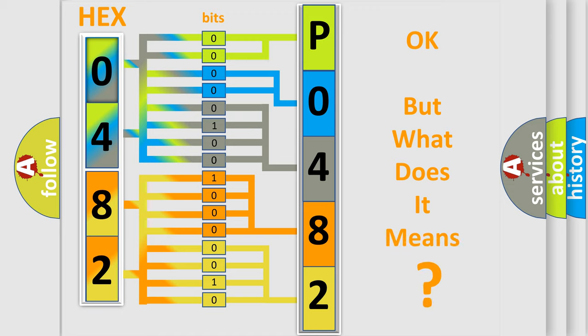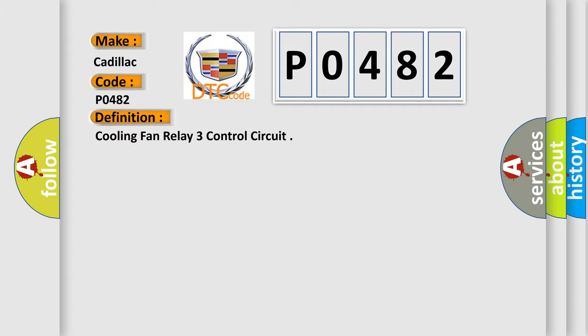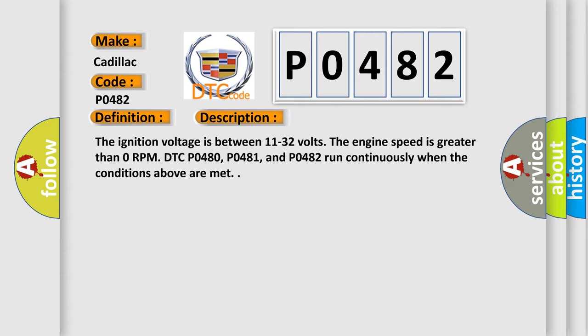The number itself does not make sense to us if we cannot assign information about what it actually expresses. So, what does the diagnostic trouble code P0482 interpret specifically for Cadillac car manufacturers? The basic definition is: Cooling Fan Relay 3 Control Circuit. The ignition voltage is between 11 to 32 volts, the engine speed is greater than 0 RPM, and DTC P0480, P0481, and P0482 run continuously when the conditions above are met.